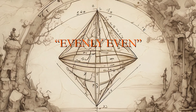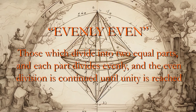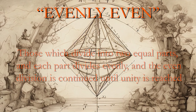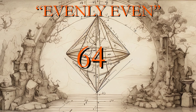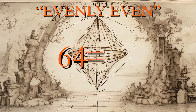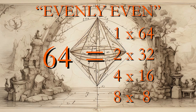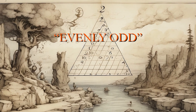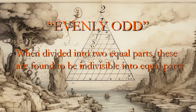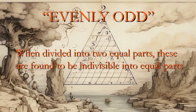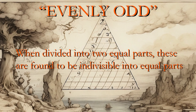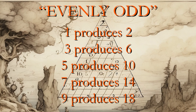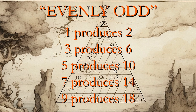Evenly even is another term applied anciently to one sort of even numbers. Such are those which divide into two equal parts, and each part divides evenly, and the even division is continued until unity is reached. Such a number is sixty-four. These numbers form a series in duple ratio from unity: one, two, four, eight, sixteen, and thirty-two. Evenly odd applied to an even number points out that like six, ten, fourteen, and twenty-eight, when divided into two equal parts, these are found to be indivisible into equal parts. A series of these numbers is formed by doubling the items of a series of odd numbers. Thus, one, three, five, seven, and nine produce two, six, ten, fourteen, and eighteen.